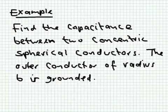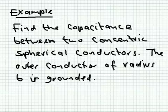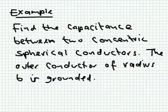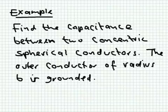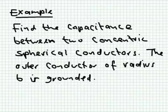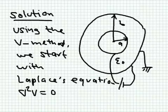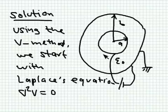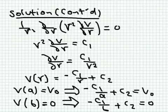For the second example, we want the capacitance between two concentric spherical conductors — the outer conductor of radius b is grounded, the inner one has radius a. We use the V method: start with Laplace's equation to get V, from V get E, from E get D, from D get the charge, then divide by the voltage difference. The boundary conditions are V equals V_0 at r equals a and V equals zero at r equals b.